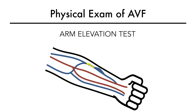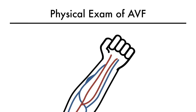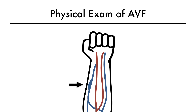Venous outflow from the fistula can be assessed using the arm elevation test. Unfortunately, this does not work with an AV graft because of the higher level of pressure in a graft compared to a fistula. The vein appears distended and engorged when the forearm is in a dependent position. However, when the forearm is elevated above the level of the heart, the blood from the fistula drains into the central veins, facilitated by gravity, and the fistula appears flat or flaccid. If there is a venous outflow stenosis preventing the blood from draining centrally, the fistula remains distended despite the change in arm position.